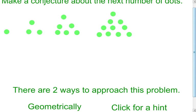Geometrically speaking, I look at my pictures and notice that I'm gaining another row on the bottom each time, and that row is gaining a dot. So my last one had four, so this one's going to have five, and then just continue the pattern up. Counting the dots: the bottom row has five, plus four is nine, plus three is twelve, plus two is fourteen, plus one — that tells me there will be fifteen dots in the next picture.